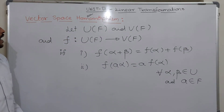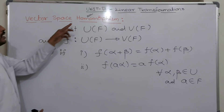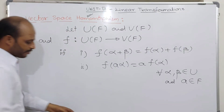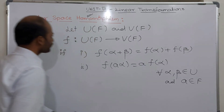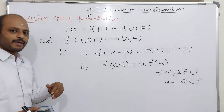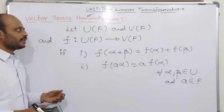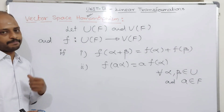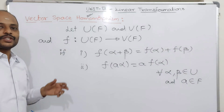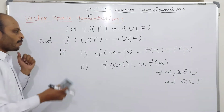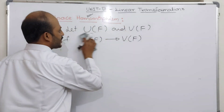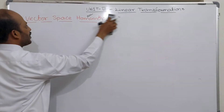Observe that if the same mapping F is onto as well as a homomorphism, it is called an epimorphism. If the same homomorphism is one-one, then it is known as a monomorphism. If it is both one-one and onto, then it is known as an isomorphism.